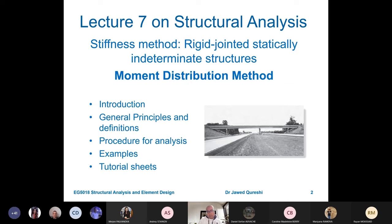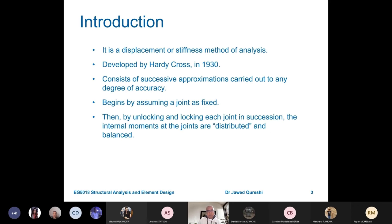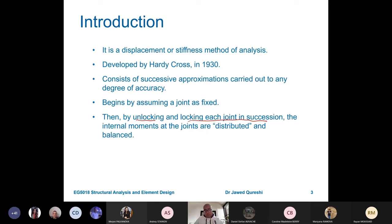This is an example of how continuous beams look, and we solve these kinds of beams using the moment distribution method. When this method was created, it consists of successive approximations. We initially assume that joints are fixed, then we unlock and lock each joint in succession. You might be thinking about what it means to unlock and lock joints — I will show you the process in a minute.